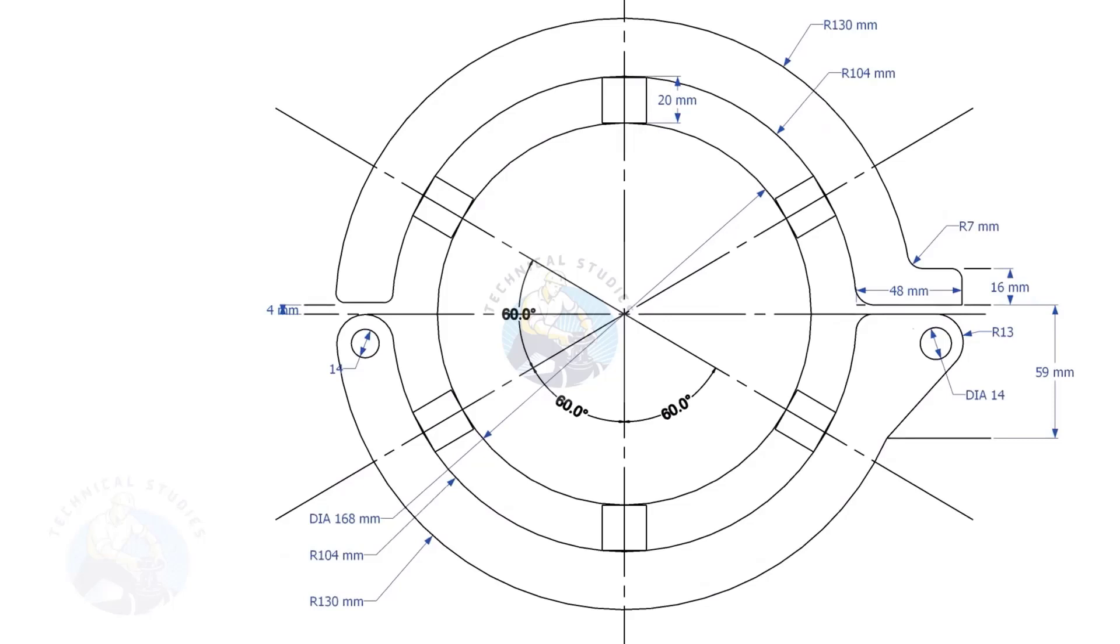This layout is for a 6-inch diameter pipe clamp. Draw the center lines and draw a circle of diameter 168 millimeters, that is the OD of the 6-inch pipe.